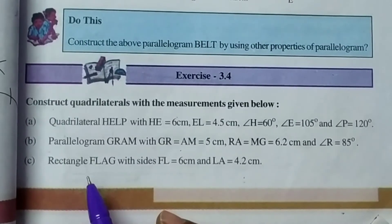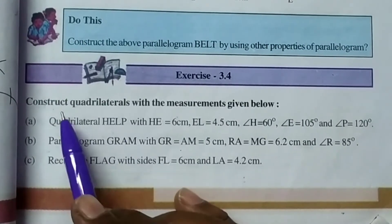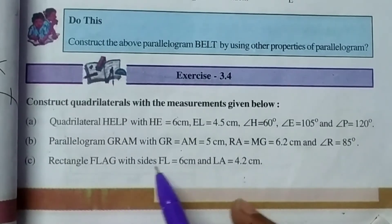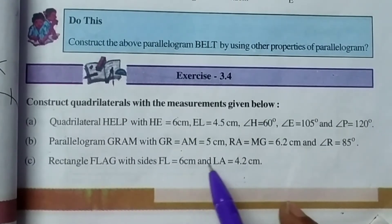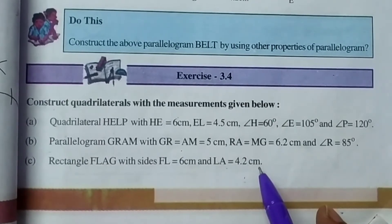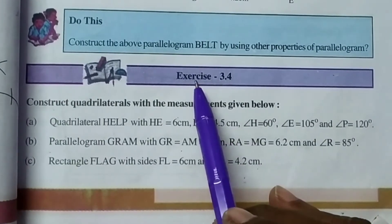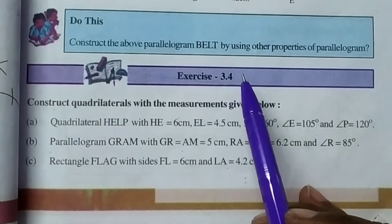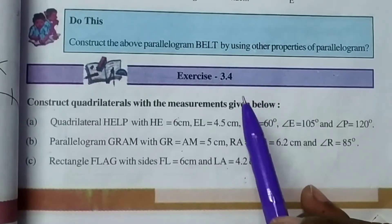From this video, I would like to explain the construction of a rectangle flag with sides FL equal to 6 centimeters and LA equal to 4.2 centimeters. This is from exercise 3.4 from 8th class of AP and Telangana state boards.